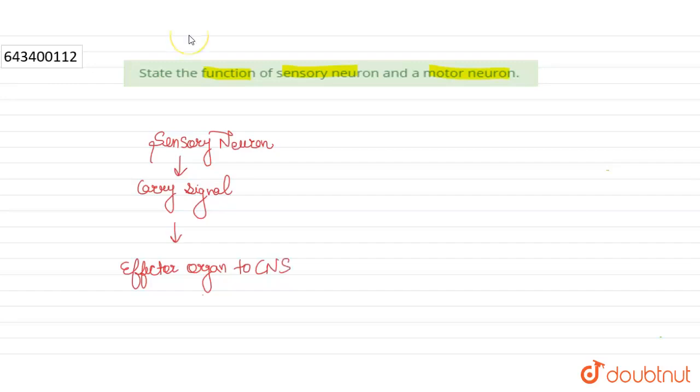On the other hand, the function of motor neurons is that they carry signals from CNS to effector organs.